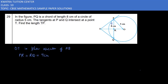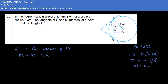PR is 4 and PO is 5. To find RO, we take triangle PRO and apply the Pythagorean theorem: 5 squared equals 4 squared plus RO squared. So 25 equals 16 plus RO squared, giving RO squared equals 9, therefore RO equals 3 cm.